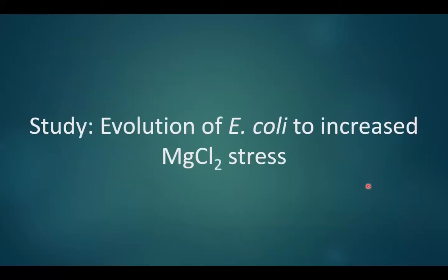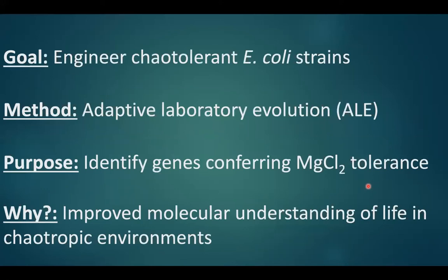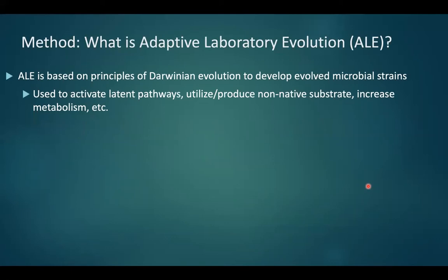The study I'll talk about today is the evolution of E. coli to increase its magnesium chloride stress tolerance. The goal was to engineer MgCl₂-tolerant E. coli strains using adaptive laboratory evolution (ALE), with the purpose of identifying genes that confer magnesium chloride tolerance, to improve the molecular understanding of the limits of life in chaotropic brines.